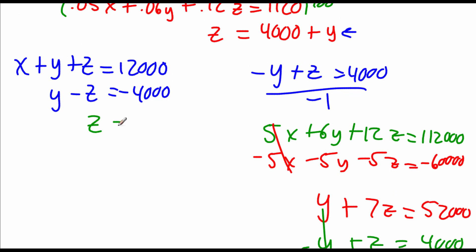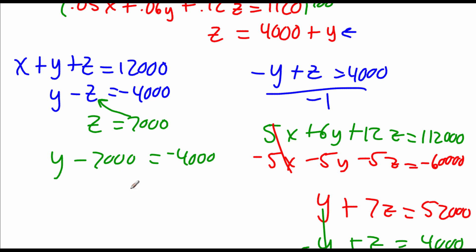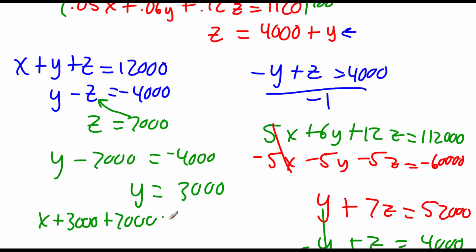Now if we back substitute with z equals 7,000 into the equation above: y minus 7,000 equals negative 4,000. Adding 7,000 to both sides, we get y equals 3,000. Then plugging y and z into the top equation: x plus 3,000 plus 7,000 equals 12,000. Since 3,000 plus 7,000 is 10,000, subtracting gives x equals 2,000. Our x value of $2,000 was in the money market fund, our y value of $3,000 was in municipal bonds, and our z value of $7,000 was in the mutual funds. That's going to be it for this video. Please remember to fill out the Google form linked in the description below, and thanks for watching.